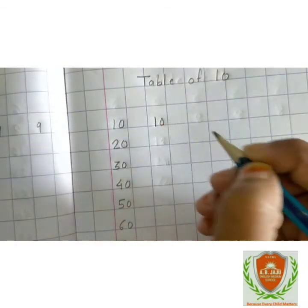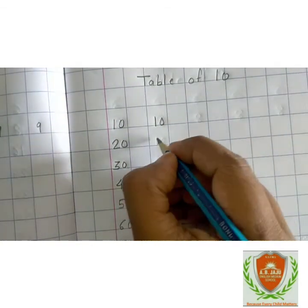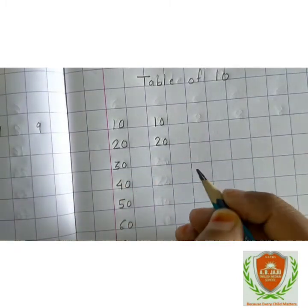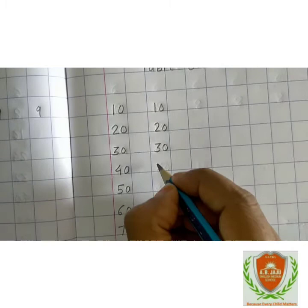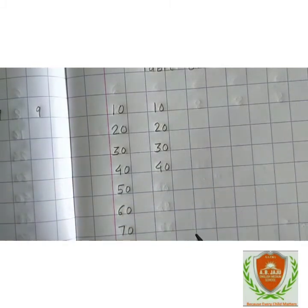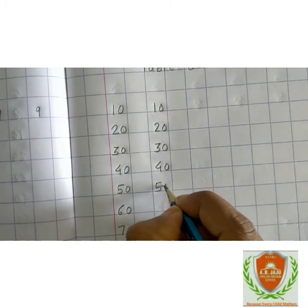10 ones are 10, 10 twos are 20, 10 threes are 30, 10 fours are 40, 10 fives are 50.